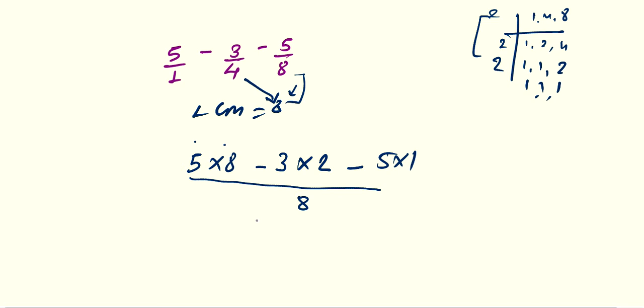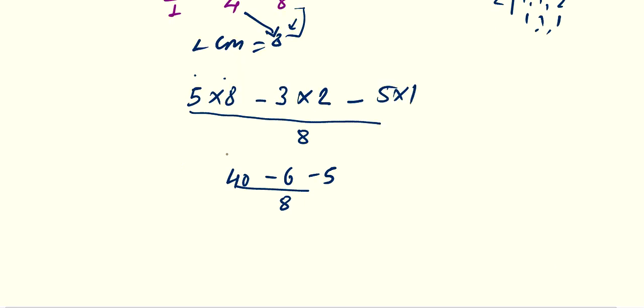5, 8, 40. 3, 2, 6. 5, 1, 5 upon 8. 40 minus 6, 34 and 34 minus 5, 29. So, 29 by 8 is your required answer.